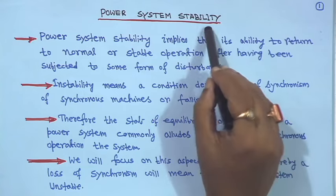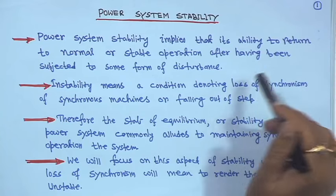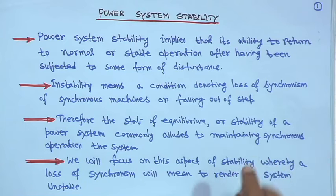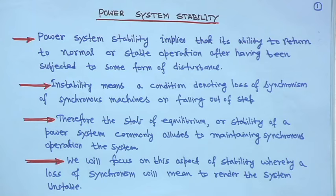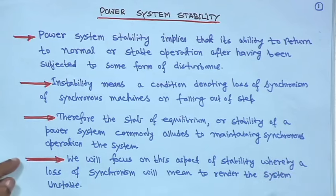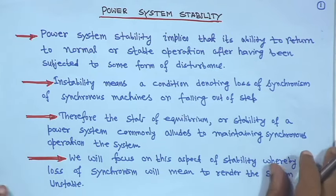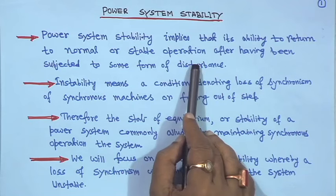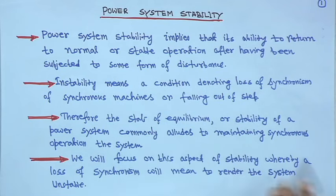For this course, this is the last topic and the title is power system stability. We will mainly see the transient stability for single machine infinite bus system, but before that we will see some description of steady state stability, dynamic or small signal stability, and some mathematical derivation. Power system stability implies the ability to maintain or return to normal or stable operation after having been subject to some form of disturbance.